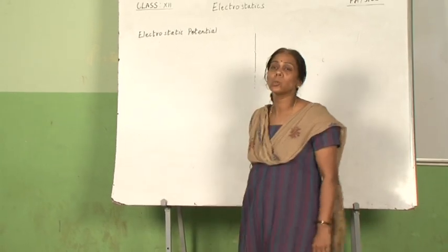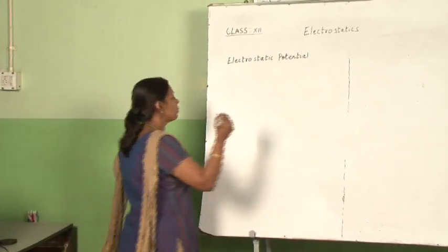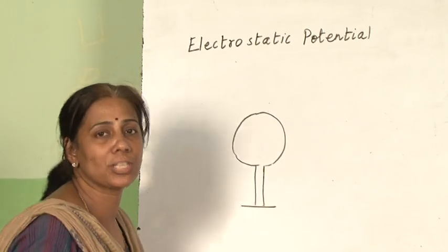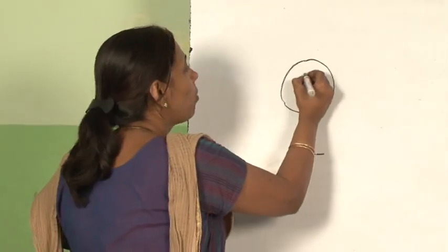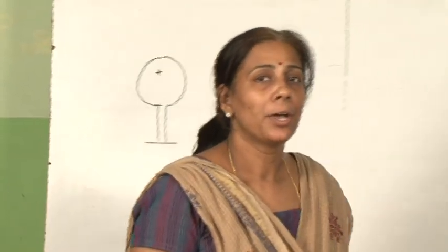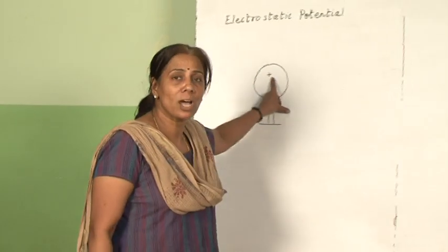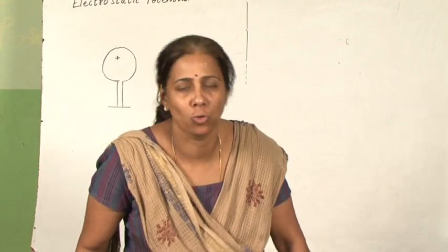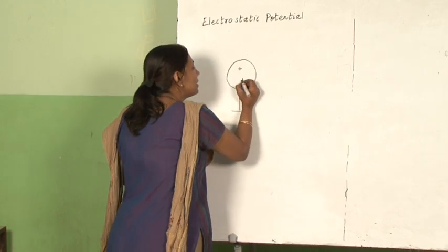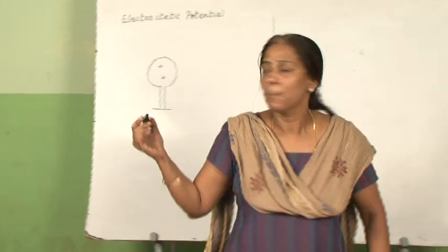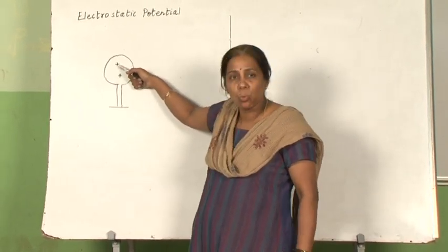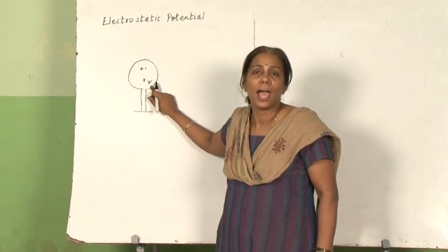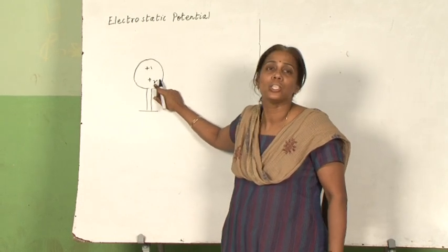Our next topic is electrostatic potential. Suppose you have a conductor supported by an insulating stand. If I bring one positive charge inside this conductor, no work is done because there is no electric field or force. But if I bring a second positive charge and place it here, work must be done to overcome the repulsive force from the first charge.